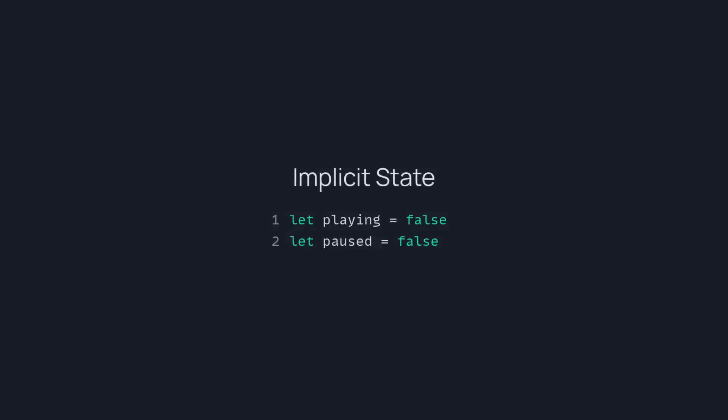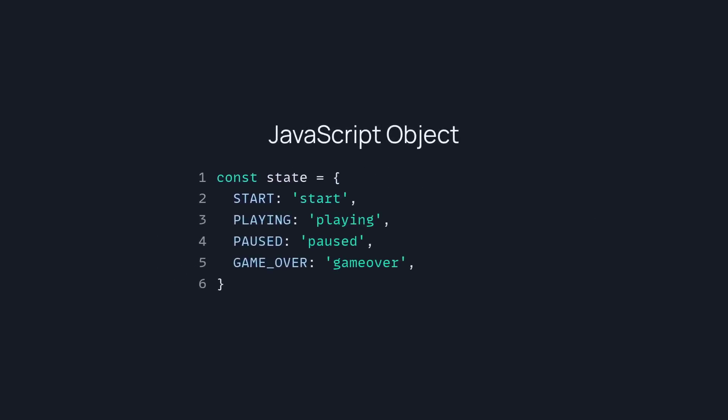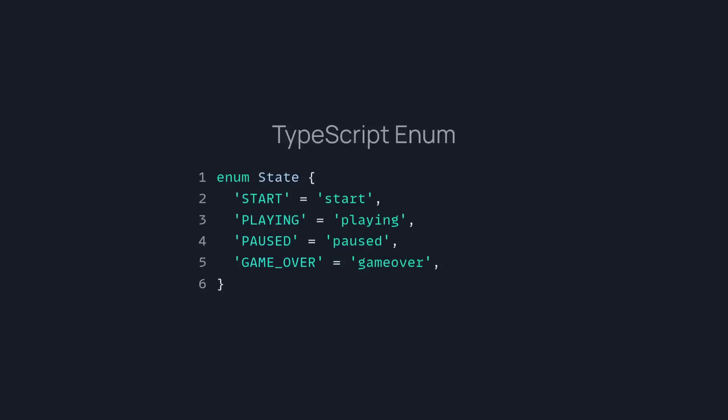So let's talk about enums. And these aren't TypeScript enums — when people talk about enums in this scenario, they mean enumerated values. So this is explicit state. Let's look at the previous example where we have implicit state. We can replace 'playing' and 'paused' with explicit state. I'm using a type from TypeScript, so we can say 'state' and pass it the explicit state. Of course, if you're not using TypeScript, you can use a JavaScript object so you don't make typos, or you can use a TypeScript enum. And this is going to be less error prone in your code.